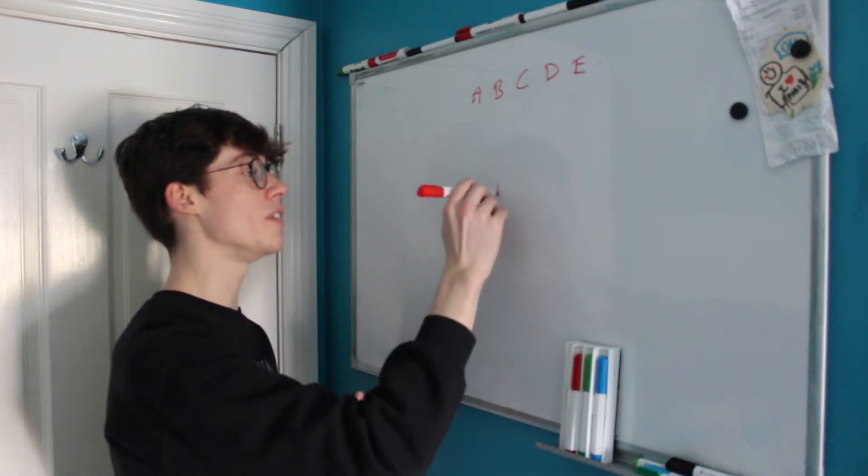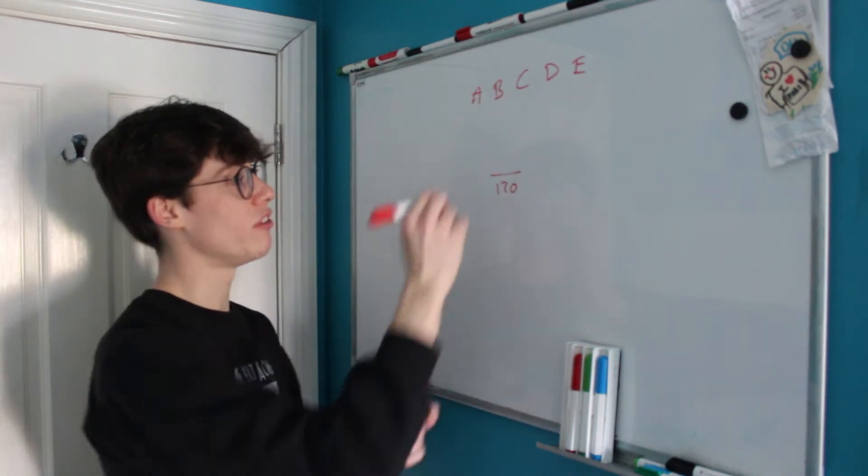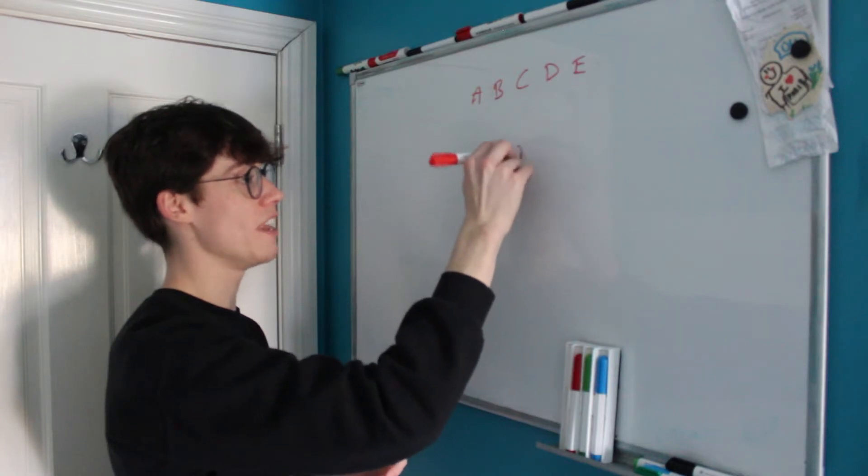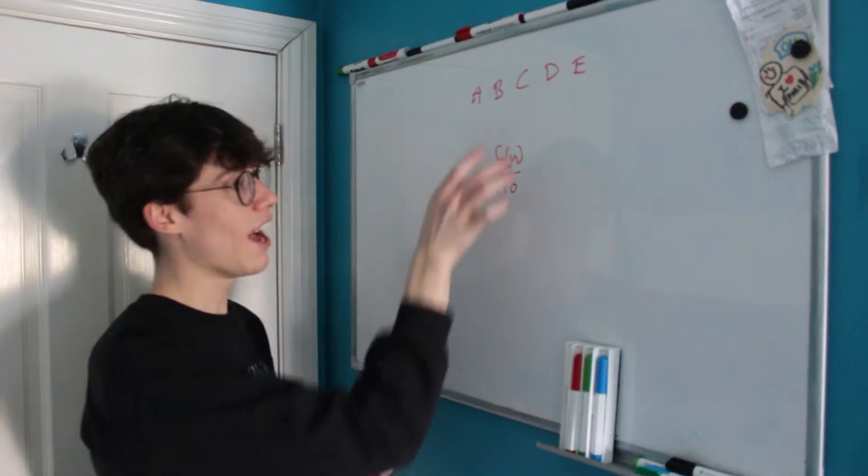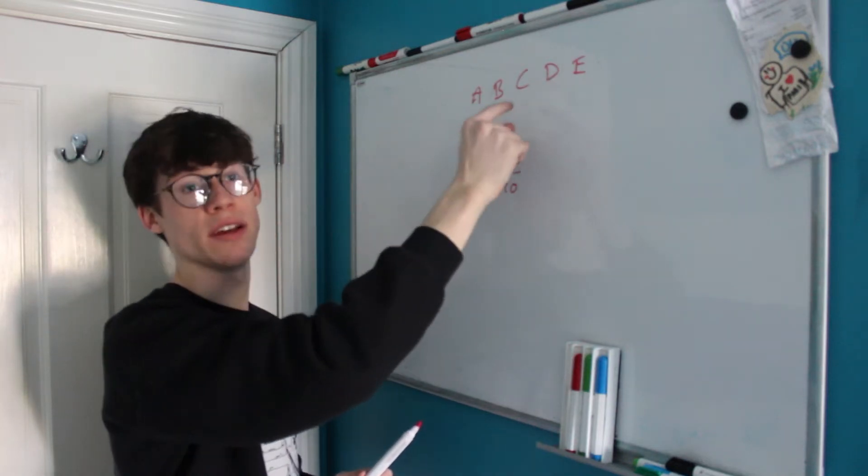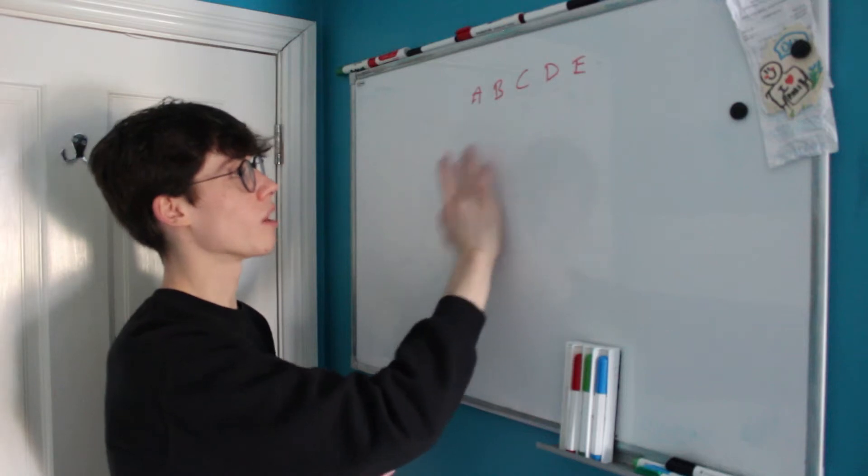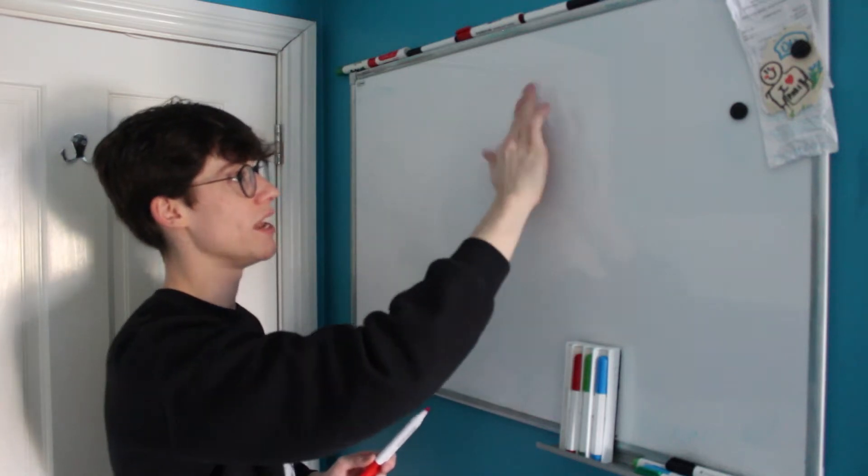So there are 120 possible combinations of A, B, C, D and E and we want to find out using some function of n that we haven't derived yet how many possible arrangements of A, B, C, D and E exist such that no letter ends up where it started. So let's see if we can work out what this function of n is.